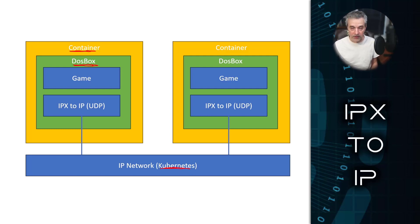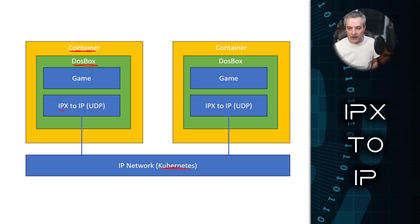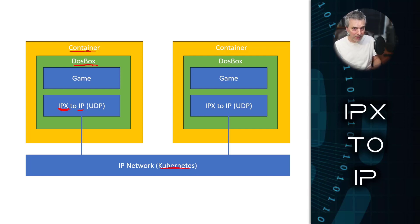Many of these games were single-player, but a few were network-enabled, and that rudimentary networking was based on the IPX protocol. IPX was hugely popular before IP became a thing. IPX started probably in the late 70s, but it really took off in the late 80s and early 90s, mainly due to Novell NetWare.